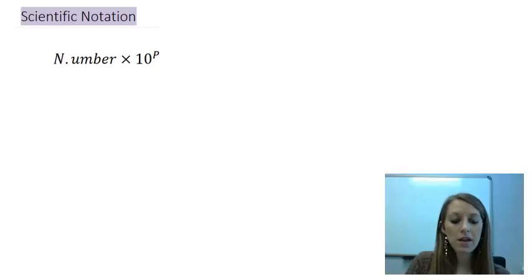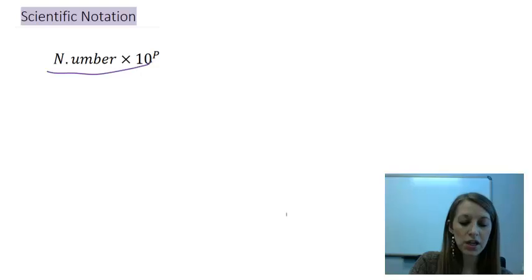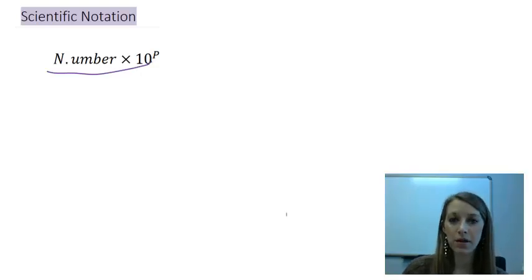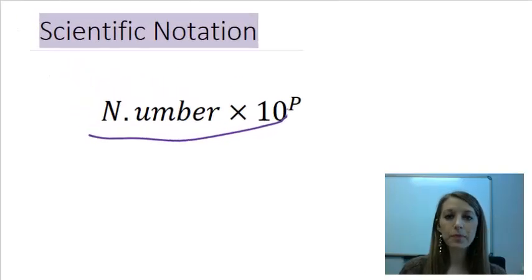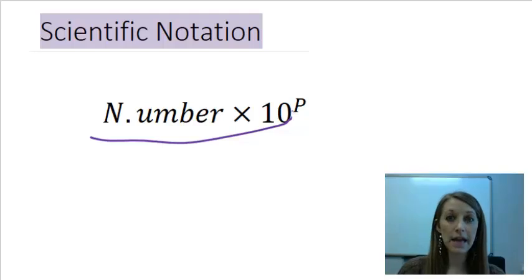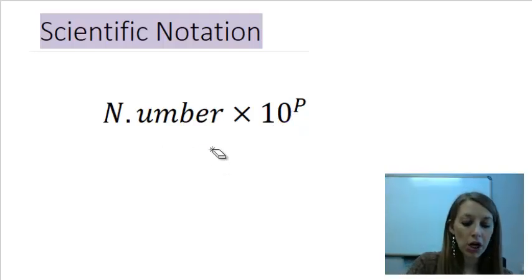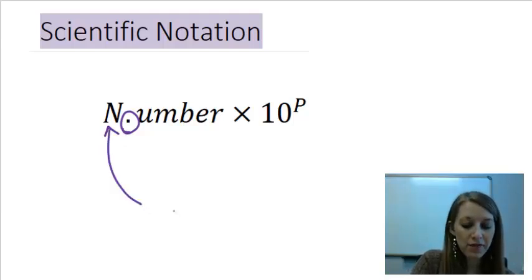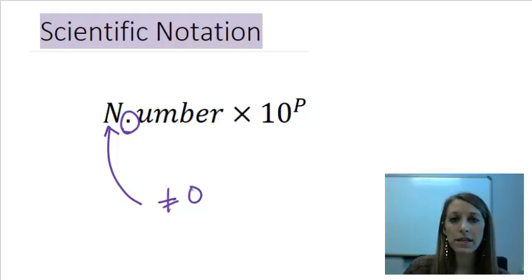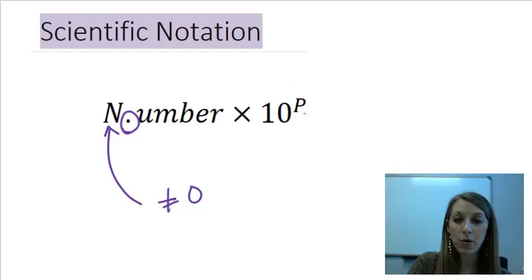The official scientific notation is written as shown here. It may look like a typo, but it's written that way for a reason. Scientific notation is a number where the decimal has to be after the first digit, and that first digit cannot be equal to zero. So it's a number where the decimal is after the first digit, times 10 to some power or exponent.